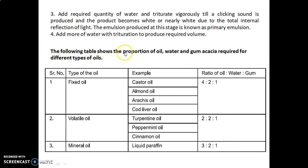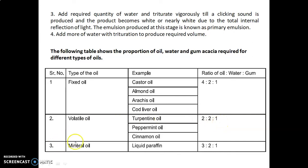The following table shows the proportions of oil, water, and gum acacia required for different types of oils. For fixed oils (e.g., castor oil, almond oil, arachis oil, cod liver oil), the ratio of oil to water to gum is 4:2:1. For volatile oils (e.g., turpentine oil, peppermint oil, cinnamon oil), the ratio is 2:2:1. For mineral oil (liquid paraffin), the ratio of oil to water to gum is 3:2:1.